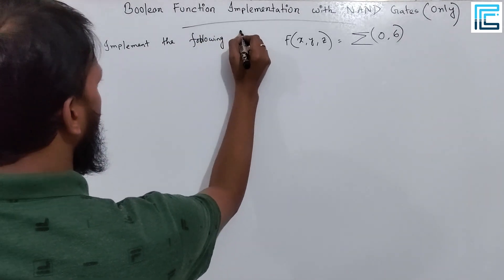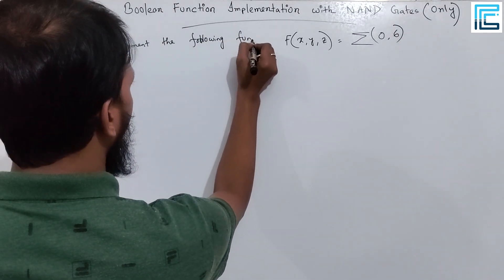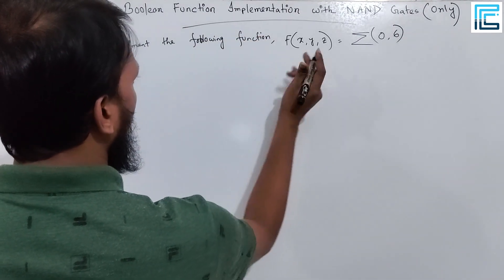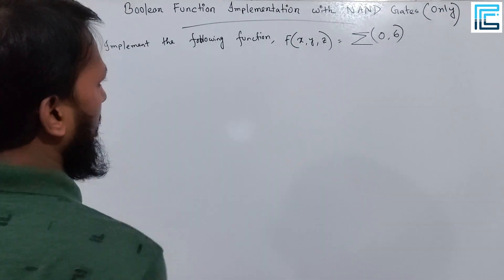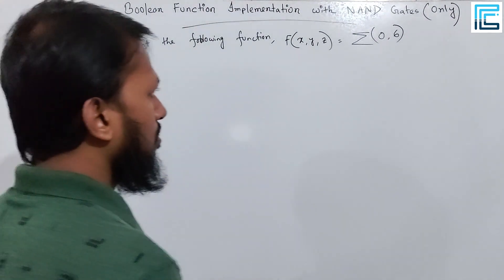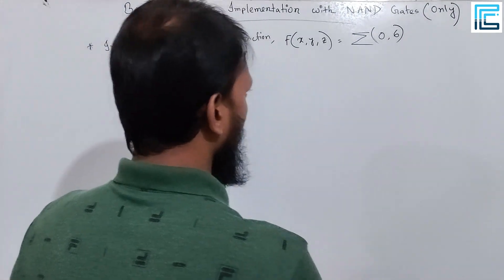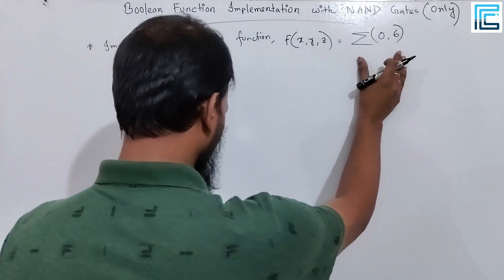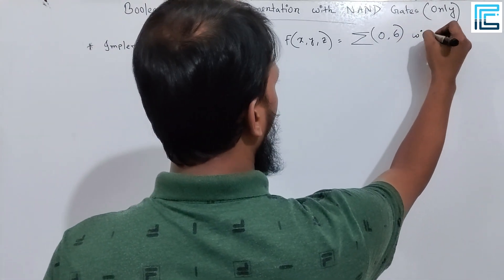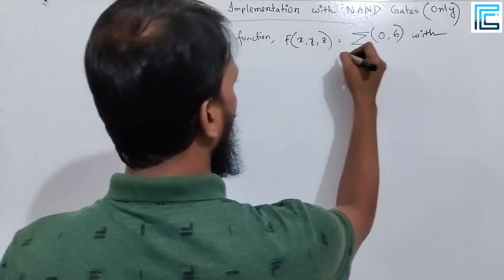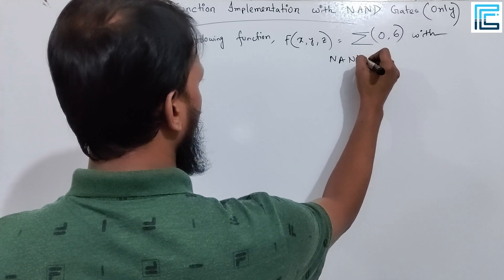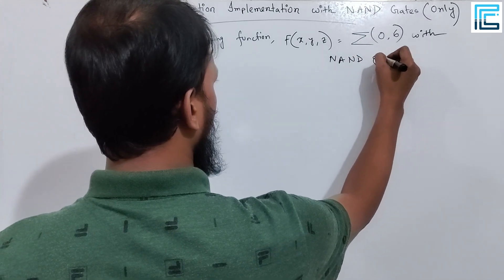The following function f of x, y, z — sum of minterms 0, 5, 6 — is to be implemented with NAND gates only.